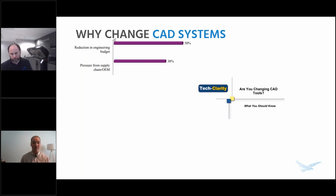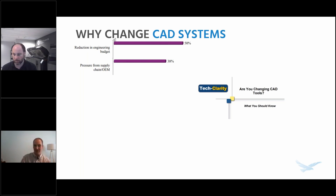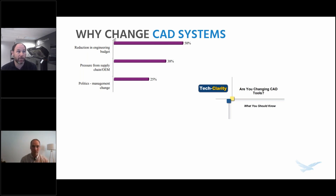Pressure from the supply chain has become a very common reason for change. Sometimes customers and clients will actually require that you design on the same tool or that the data you return to them be in a specific format. Being on the same CAD tool mitigates translational issues and provides the best possible collaboration — you get that full parametric history going along with the model, making changes as easy as possible. Anytime you make a translation, you lose data, so syncing with your supply chain greatly reduces that data loss.